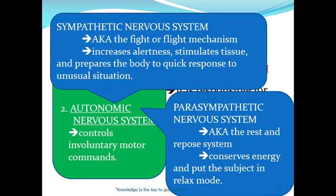Under the autonomic nervous system, we have two types: the parasympathetic nervous system and the sympathetic nervous system. The sympathetic nervous system is known as the fight-or-flight mechanism. It will increase your alertness, stimulate tissues, and prepare the body to a quick response to an unusual situation.